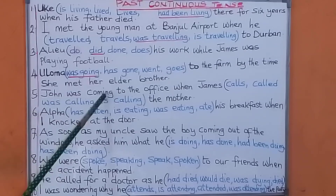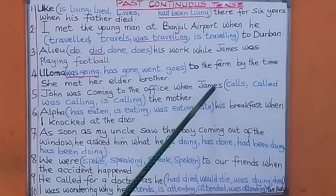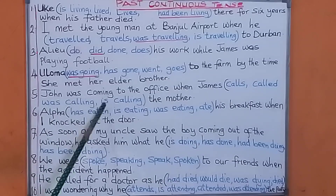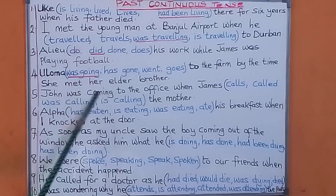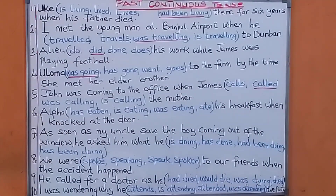Number five: John was coming to the office when James — called / was calling / is calling — the mother. John was coming to the office, so when James did what? Called the mother. The answer is 'called.'